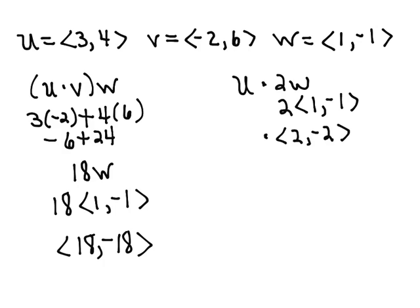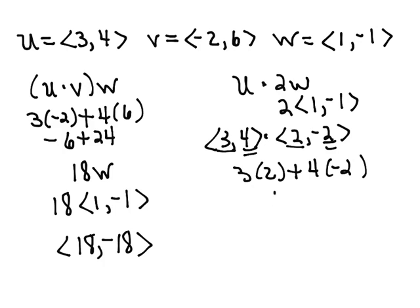And we want to dot that with U, which is the vector 3, 4. So we're going to multiply our X terms, 3 times 2, and add that to the product of our Y terms, which is 4 times negative 2. So we get 6 plus negative 8, and so our answer is negative 2.